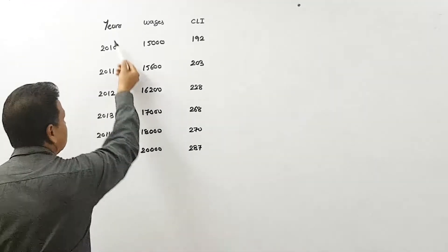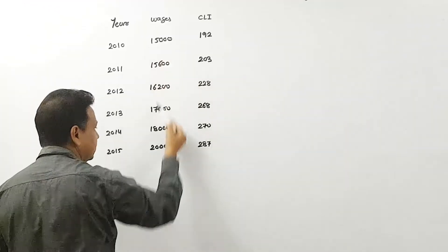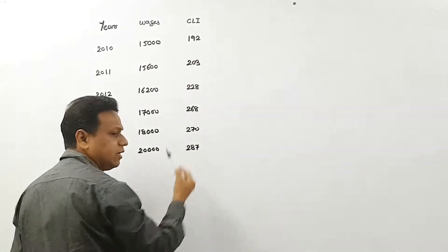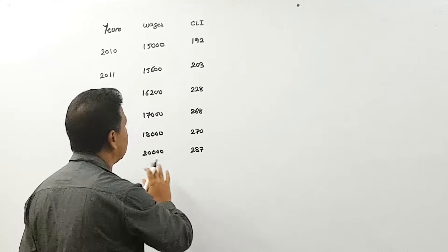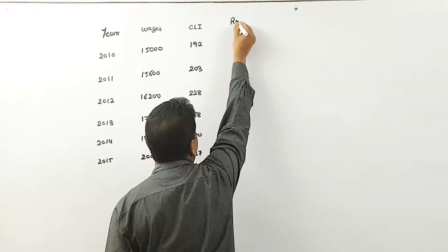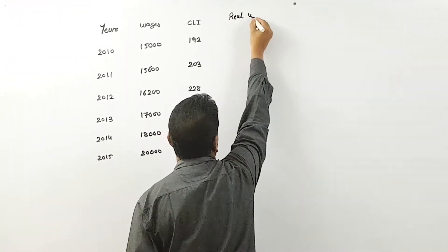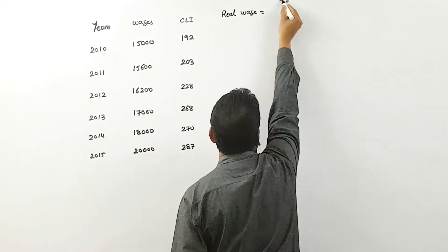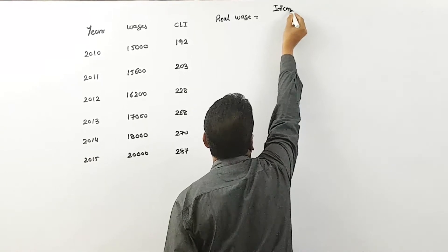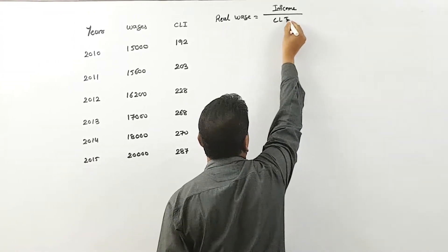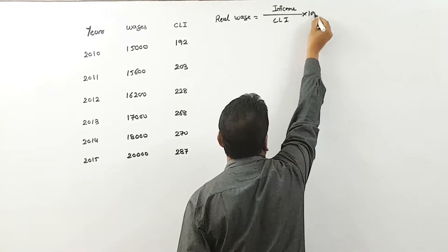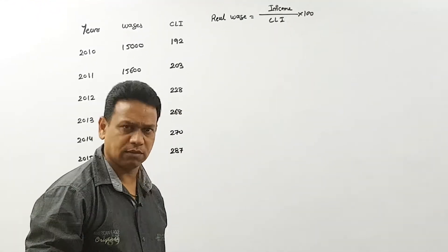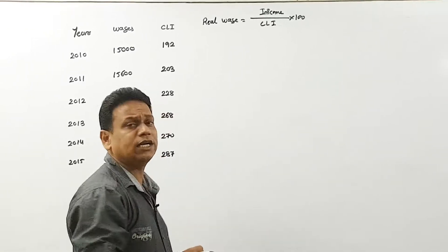So illustration number 23 — I have written on the board three columns: year, wages (the actual salary), and the cost of living index number. Now with the help of this we have to make another column — real wages. The formula is: income divided by CLI into 100, where CLI means cost of living index number.